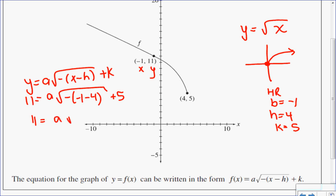So 11 equals a times negative. Negative 1 take away 4 is negative 5. Underneath the radical, two negatives make a positive. So negative negative 5 is a positive 5.